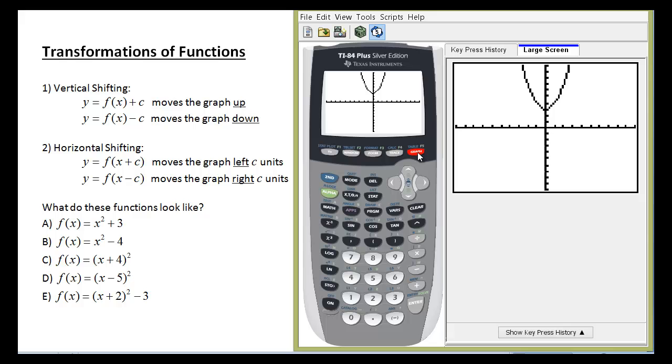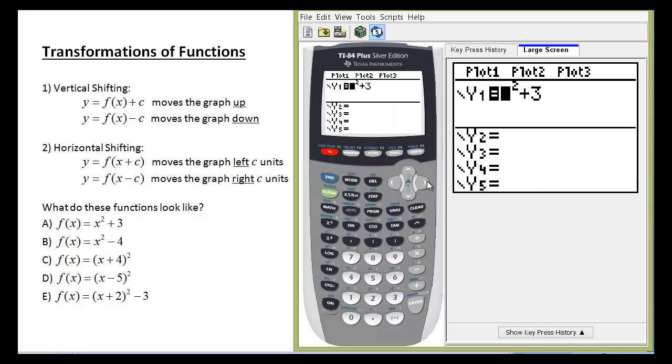Now that's called a vertical shift up, all right? So by adding a constant to the end of a function, you vertically shift it up. Here, let's go change that, plus 3.